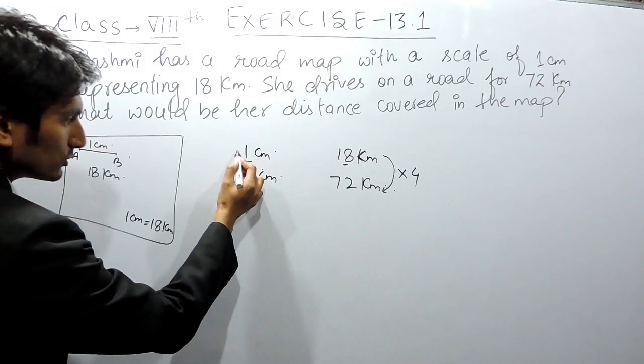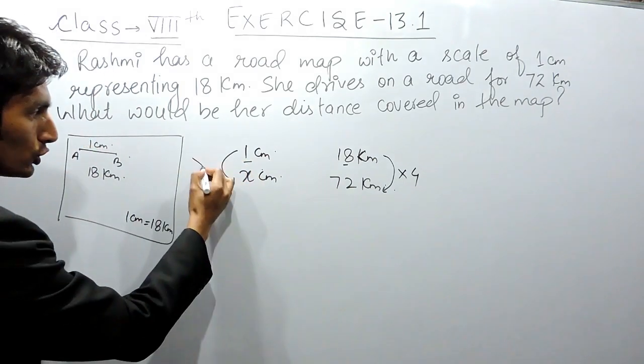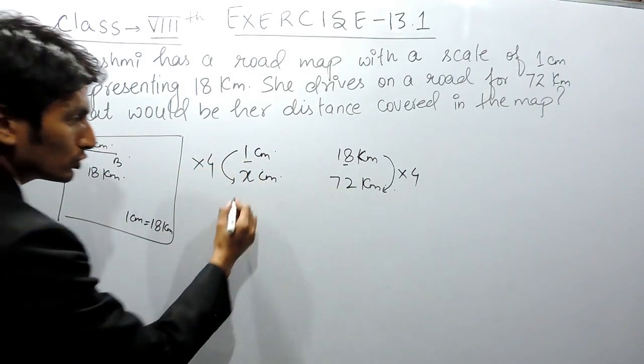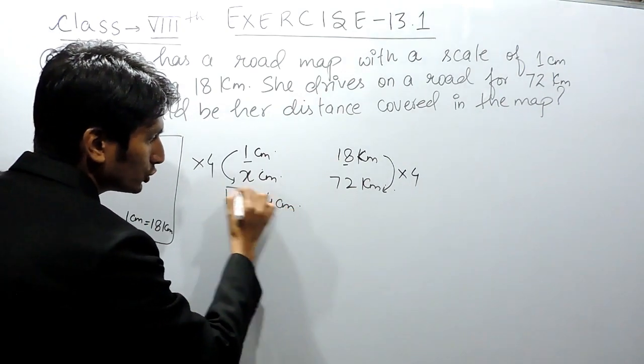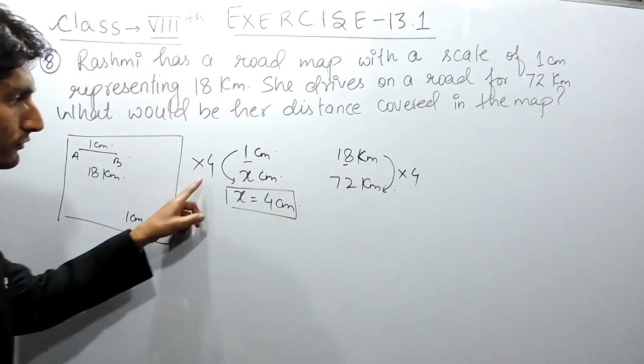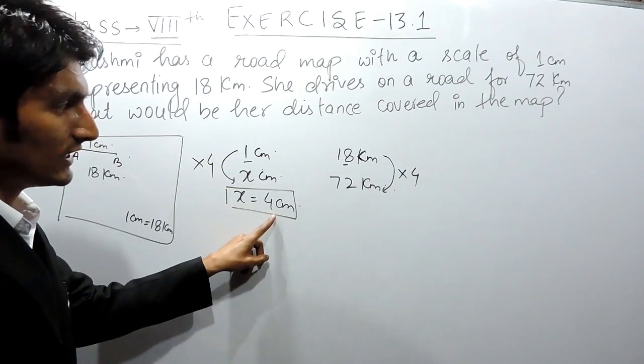Similarly, here also on map it should increase 4 times. So we can say that the value of x here should be 4 centimeters, because 4 multiplied by 1 is 4 centimeters.